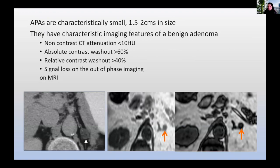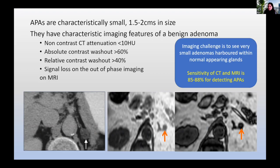Non-contrast CT attenuation is less than 10 Hounsfield units. They have characteristic washouts: 60% absolute and 40% relative. On MR, they show loss of signal intensity on out-of-phase images. The imaging challenge is really to find these small lesions. The sensitivity and specificity of MR is around 88% for detecting small APAs, meaning about 20% will not be seen, and we then have to consider what else can be done.